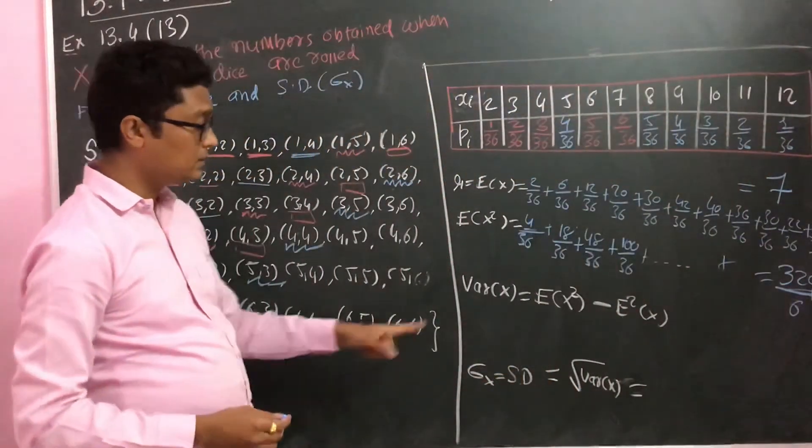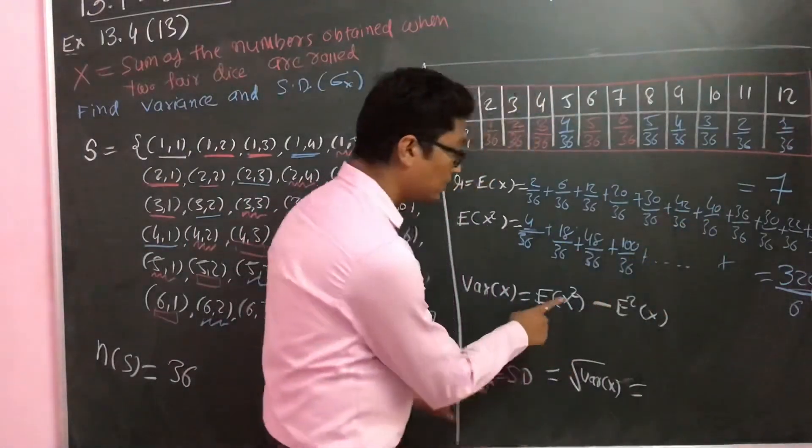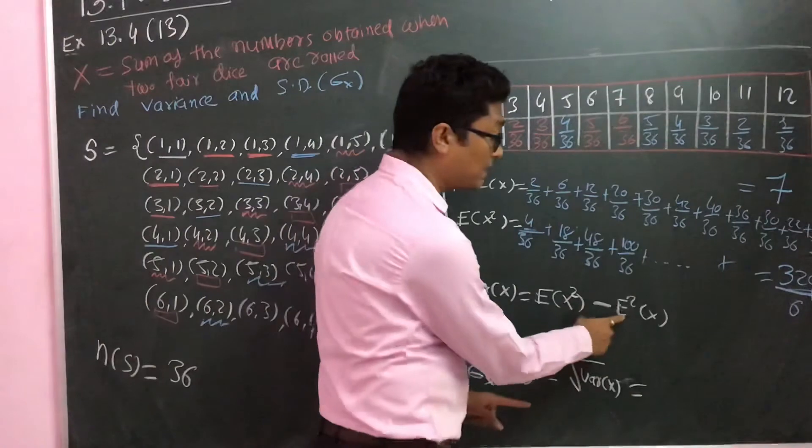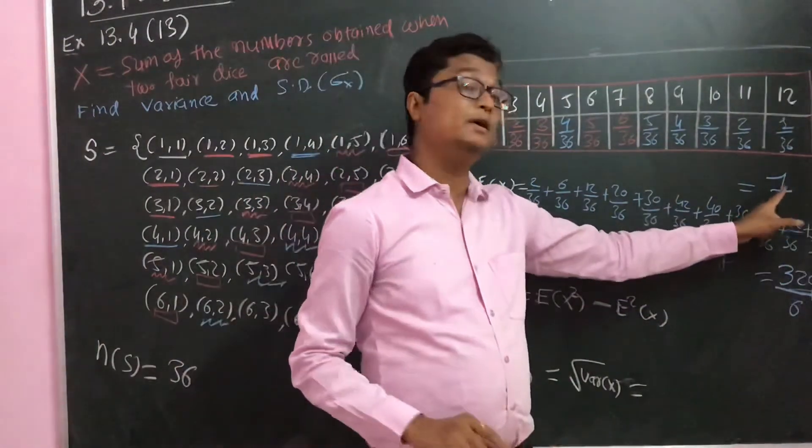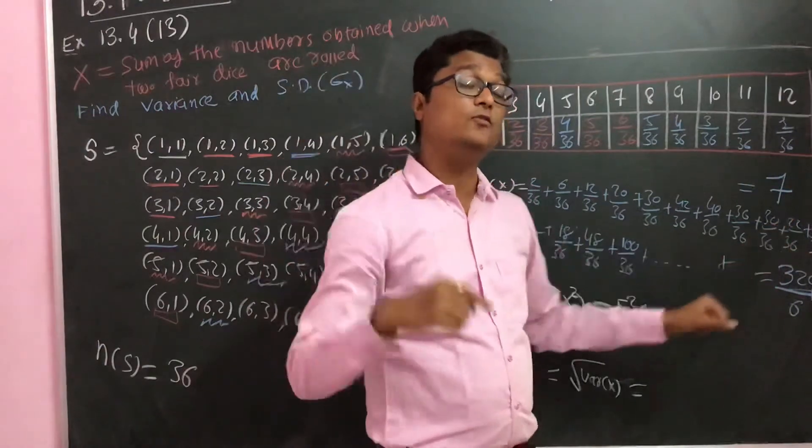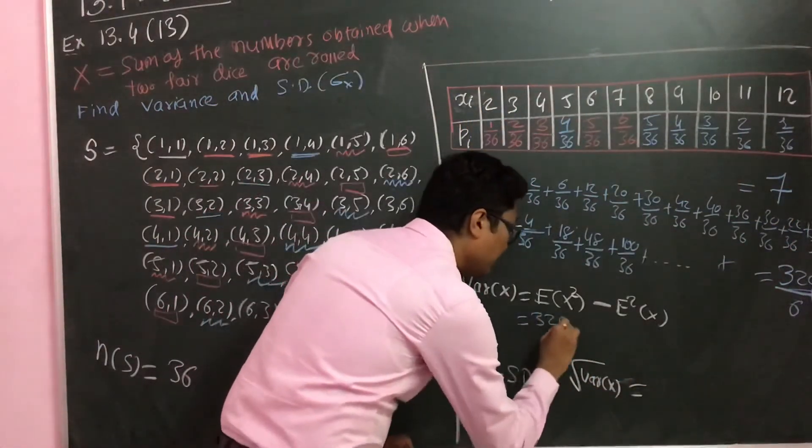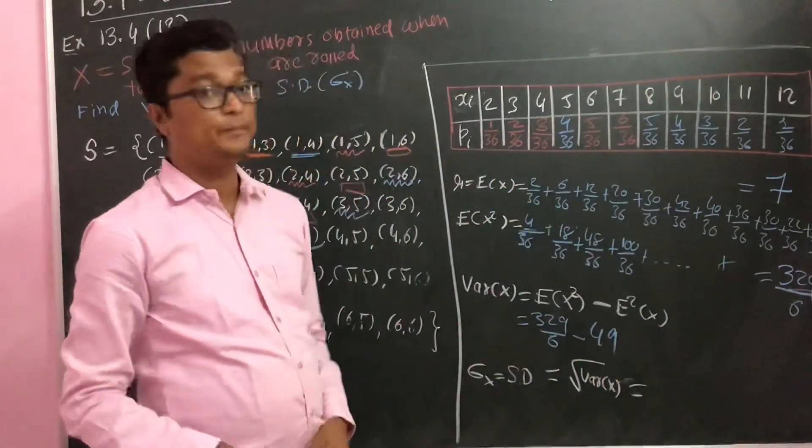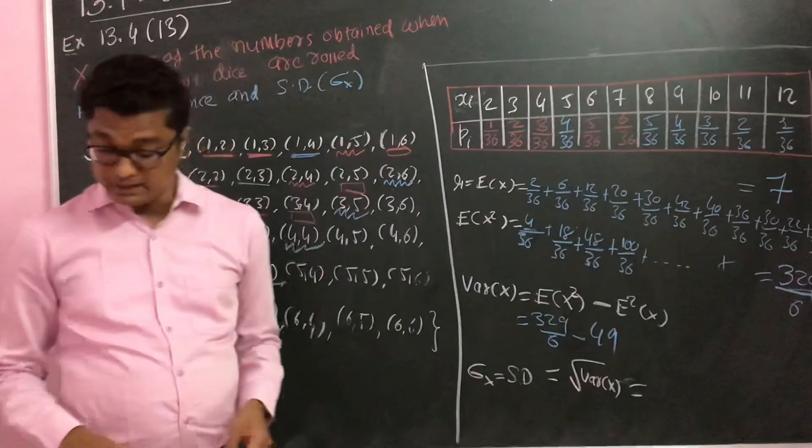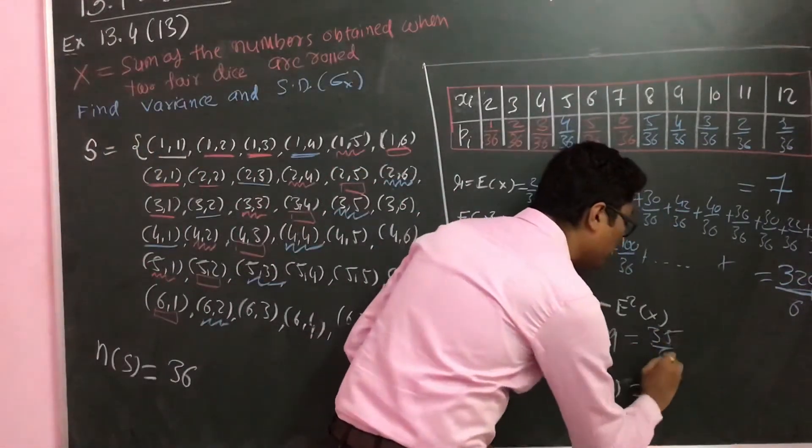Then after, you have to take the subtraction of these two. This is E of X square, and here you take E square of X, which means 7 square, that is 49. So you have 329 by 6 minus 49. If you will simplify it, you will get the answer 35 by 6.